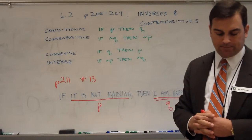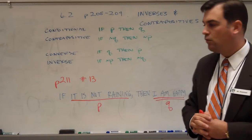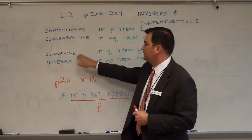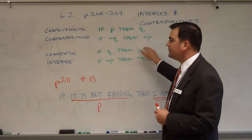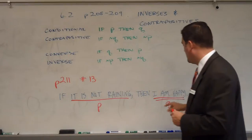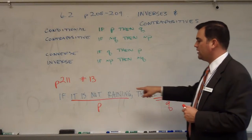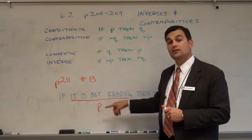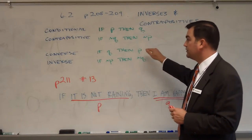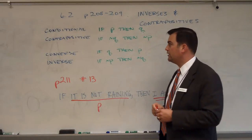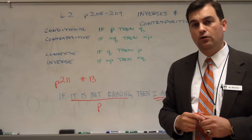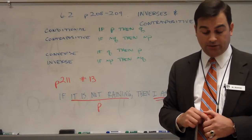Let's look at 13c: I am happy. 'I am happy' is affirming the conclusion, and that's called the converse — if Q, then P. But the converse is not necessarily logically equivalent to the original conditional. If I am happy, that does not necessarily tell me whether or not it is raining. Simply affirming the conclusion does not necessarily affirm the hypothesis. So if I am happy, there is no additional conclusion that I can draw. I don't know whether or not it is not raining; I just simply know that I am happy.